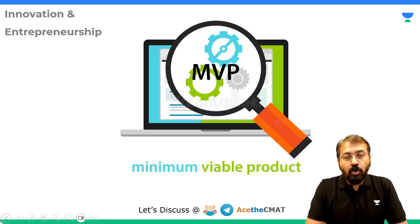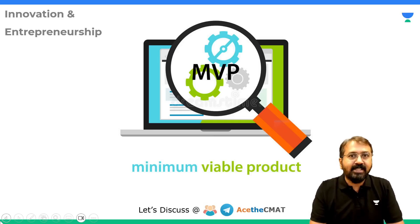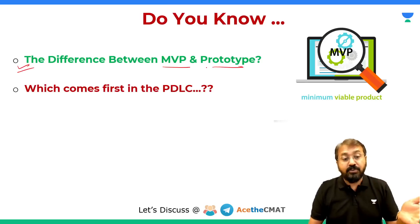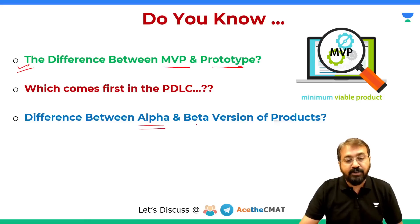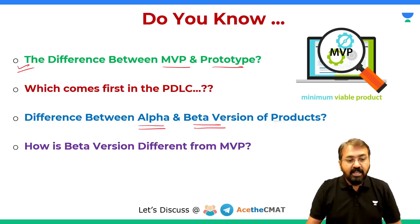In the product development life cycle of an entrepreneurship journey, we come across various terms like MVP, prototype, alpha version, beta version, and so forth. Students find it slightly confusing to understand the difference between them and which comes first. In this video, we are going to understand all these points: what is the difference between MVP and prototype, which comes first in the product development life cycle, and we'll also understand alpha testing and beta testing.